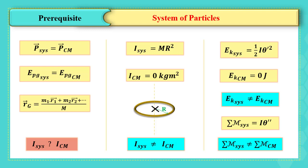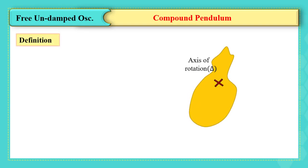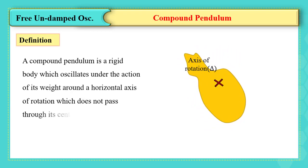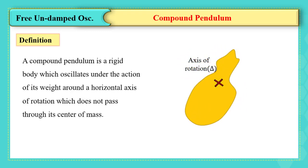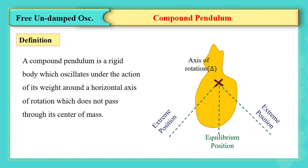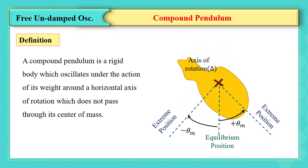A compound pendulum is a rigid body which oscillates under the action of its weight around a horizontal axis of rotation that does not pass through its center of mass. The pendulum rotates in the vertical plane around this horizontal axis and oscillates between two extreme positions, θ_max and −θ_max, around its equilibrium position. This pendulum is in equilibrium when the axis of rotation and the center of mass are on the same vertical.